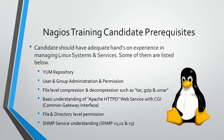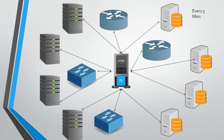Once Nagios is installed, it checks each and every node listed in the Nagios configuration every 5 minutes. In a typical diagram we have 2 Cisco routers, 2 Cisco switches, 4 servers, and 4 desktops. Once configured, Nagios monitors the ping of each device, checking basic connectivity between the Nagios server and each remote node every 5 minutes.